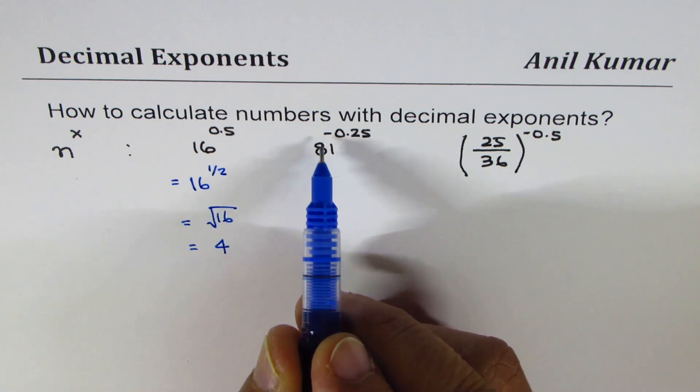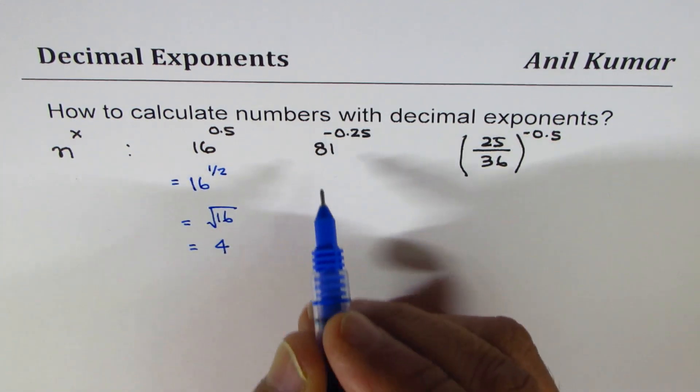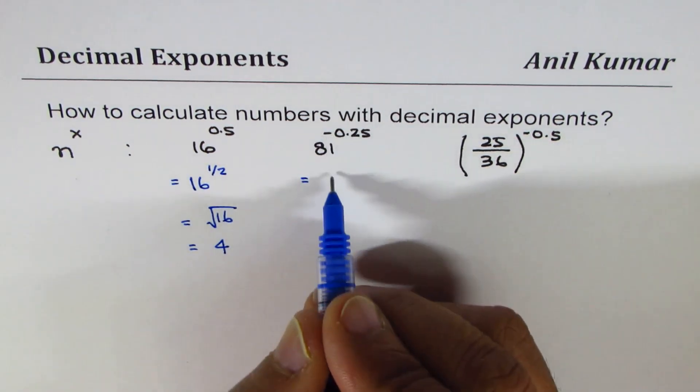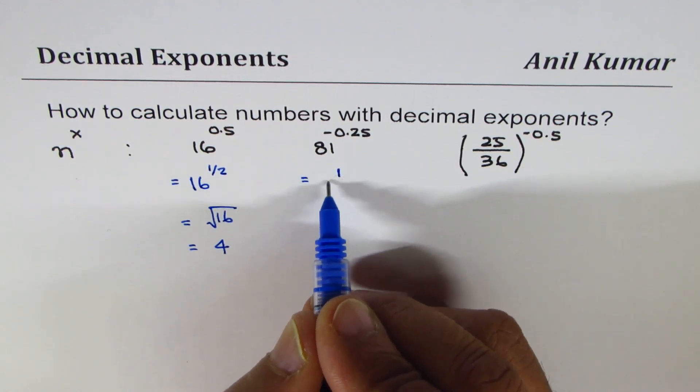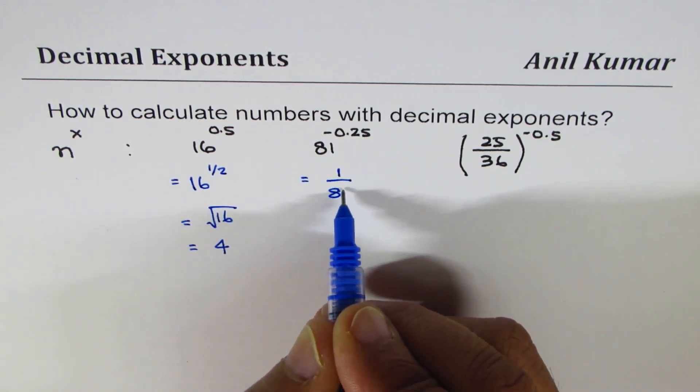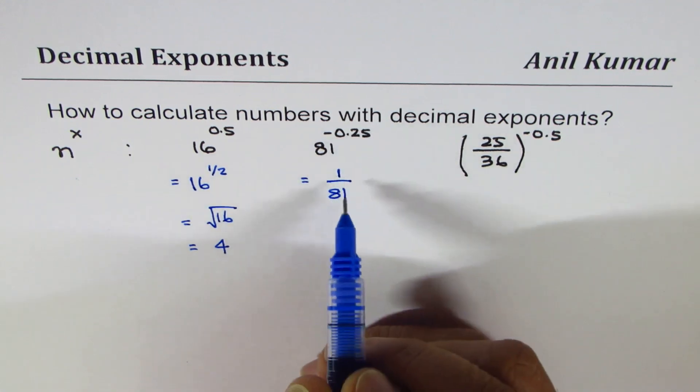Now when I say 81 to the power of minus 0.25, minus makes it reciprocal, so it becomes 1 over 81, and I can convert 0.25.